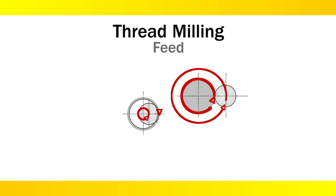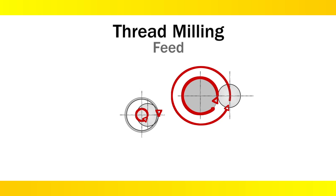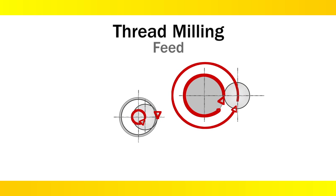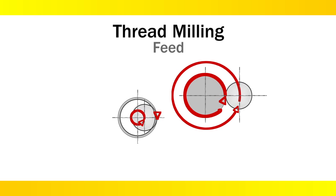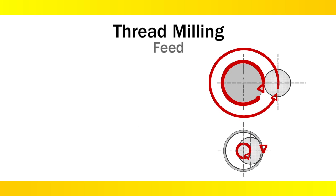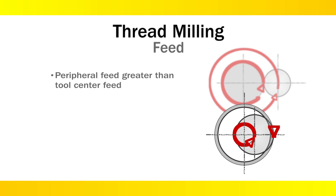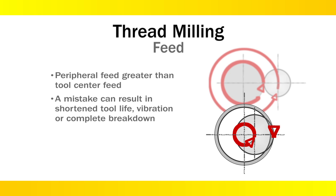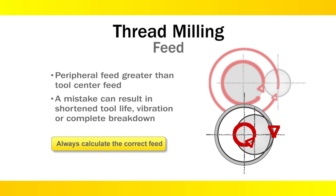Care must also be taken when calculating the feed rate. Most toolpath feed rates are calculated by the centerline of the tool, which when thread milling internal threads means the periphery feed rate is faster than the centerline feed rate. It will need to be adjusted to compensate for this effect and reduce the chance for tool vibration or tool life issues.